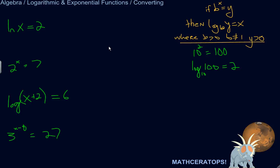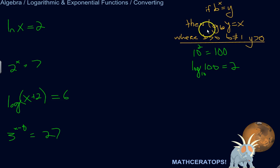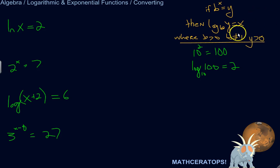Let's convert between logarithmic and exponential functions. Here's a little explanation on how they relate to each other, and I have this thing in green as my model that helps me keep it straight, so I encourage you to use it if that helps. Exponential and logarithmic functions are inverses of each other, so if b to the x equals y, then log base b of y will equal x. The assumptions are that b is greater than 0 and not equal to 1, and y is greater than 0.